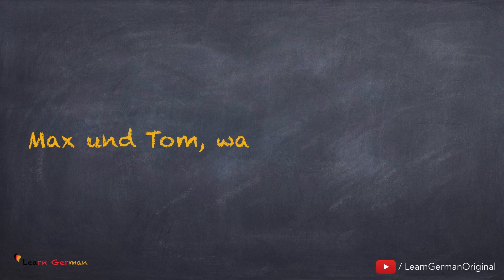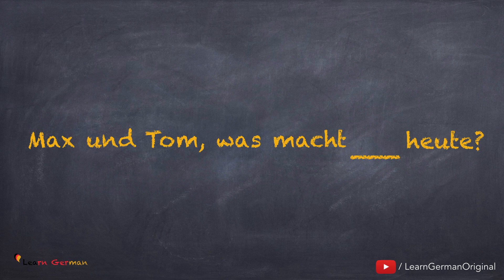Here's the third one. Your answer should be: 'Max und Tom, was macht ihr heute?' The situation is informal and you're talking directly to two people, hence you will use the personal pronoun ihr.